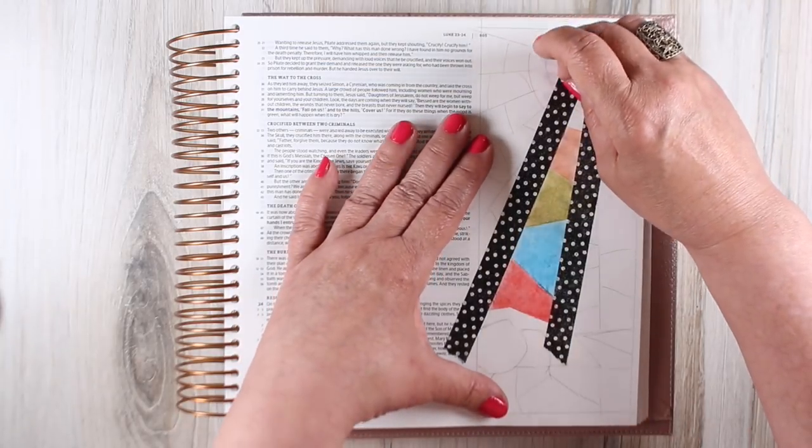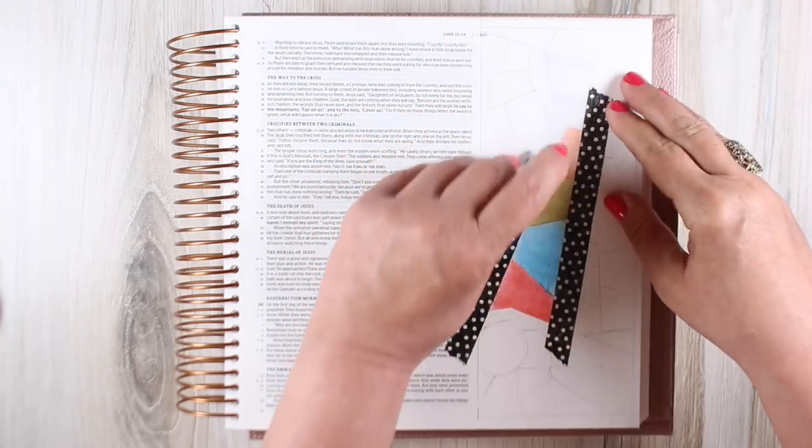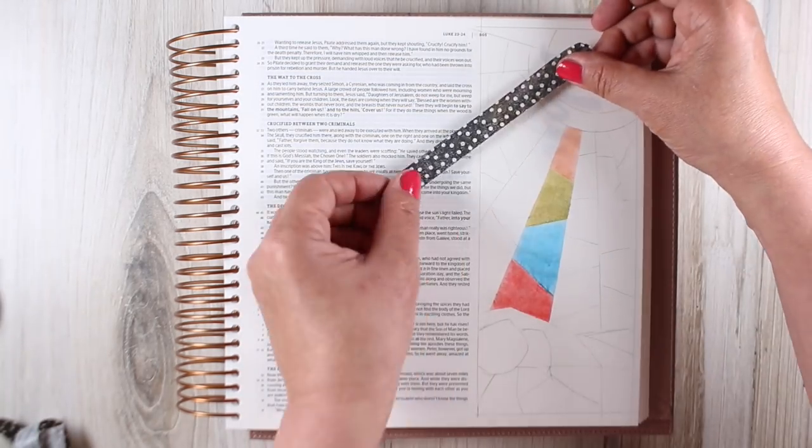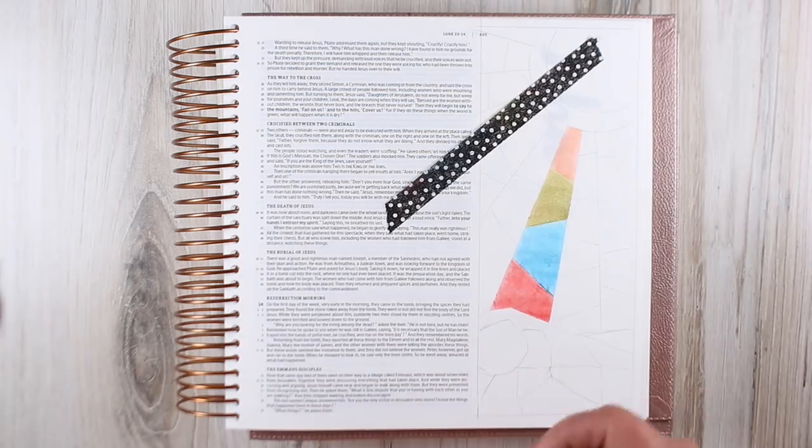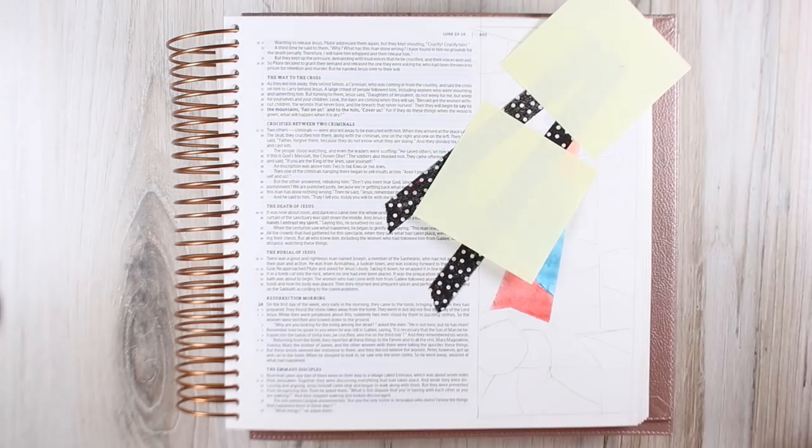So this strip is done and you can gently pull off all of the washi tape. When you pull washi tape off, just pull it kind of at an angle low to the paper. If you pull it straight up you're more likely to rip your paper.